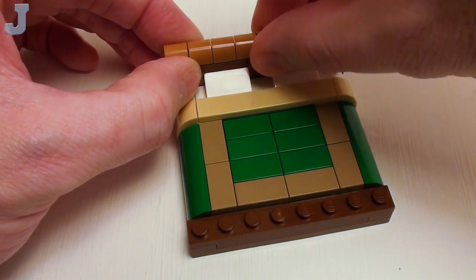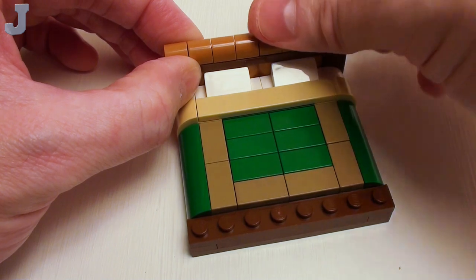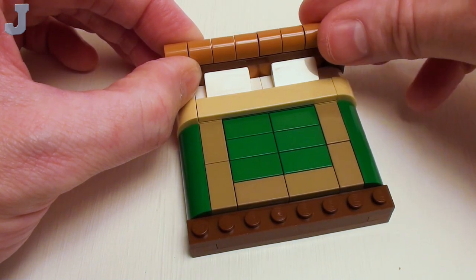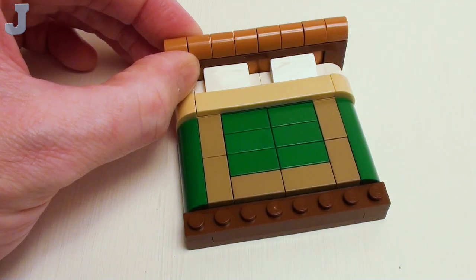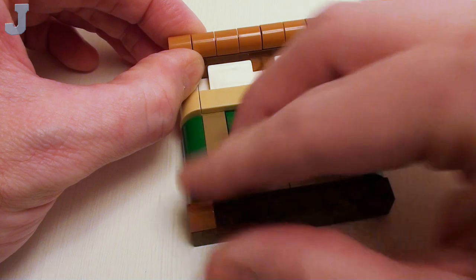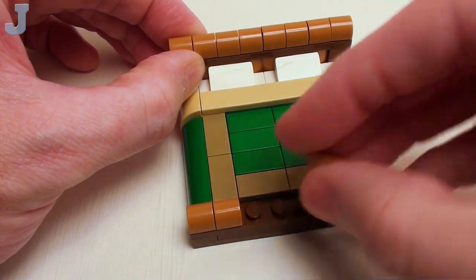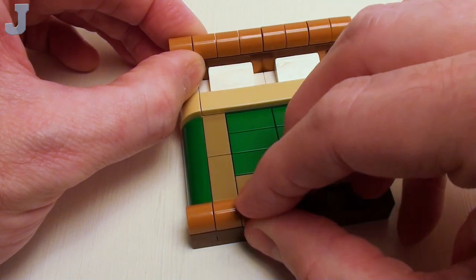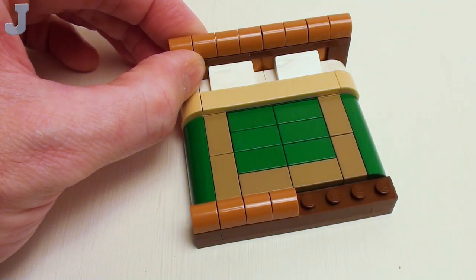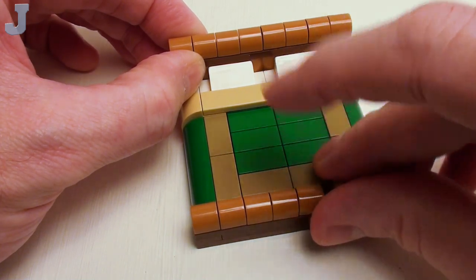Now I could speed-build through this, but I want to be sure that nothing turns into powder. Basically, what this is going to do is give us the illusion of a sleigh-style bed. Now, you don't have to use medium nougat or reddish-brown for this. You can make it any color you wish. Let's place the last four here. Looks like we may have survived reddish-brown.